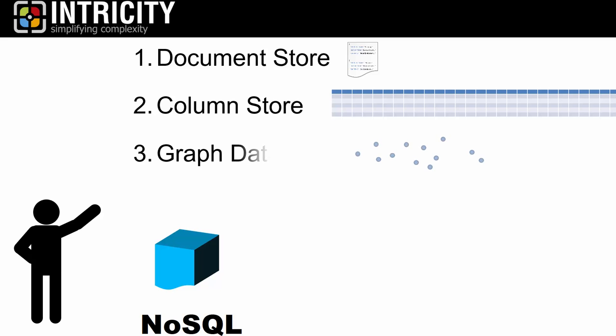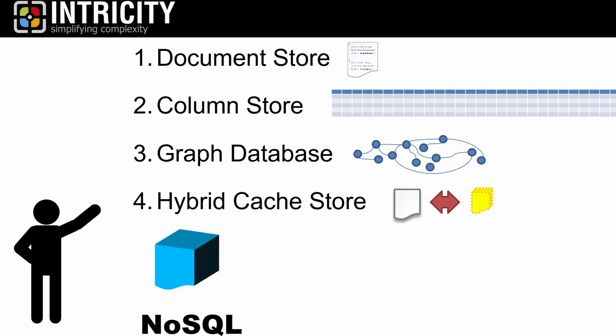You also have graph databases, which store natural data relationships between data elements to reveal networks like social networks. Then you also have hybrid cache stores, which combine the power of a document store, which we've been talking about in this example, with sophisticated caching to deliver scalability and speed.